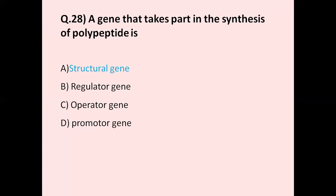Question number 28: A gene that takes part in the synthesis of polypeptide is — option A structural gene, option B regulator gene, option C operator gene, option D promoter gene. The correct answer is structural gene. The structural gene has genetic information for the synthesis of a polypeptide. The other three options are used in the operon. The correct answer is structural gene.